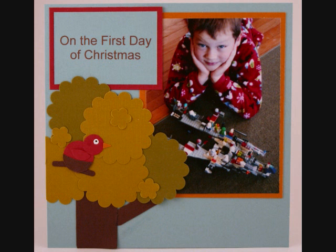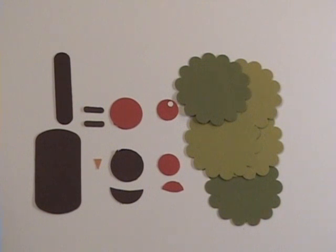On the second day of Christmas, my true love gave to me... First day of the 12 days of Christmas. I'm actually going to be making a 12 page scrapbook using punches for the 12 days of Christmas, our traditional Christmas song. So, first day of Christmas, my true love gave to me a partridge in a pear tree, so that's what we're going to make.